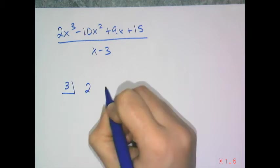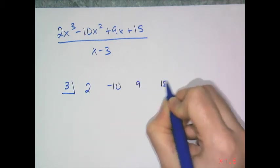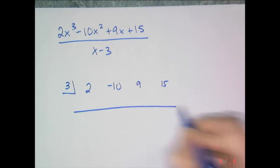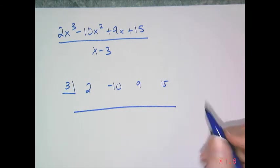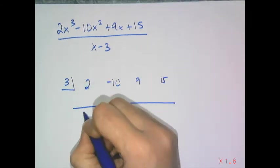But I have all of my terms. So I have a 2, a negative 10, a 9, and a 15. I put a bar beneath it and then I bring down that leading coefficient. So the 2 just goes down.